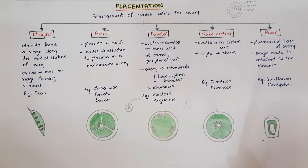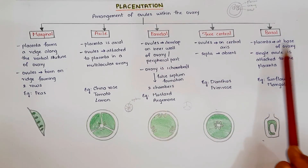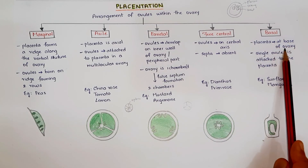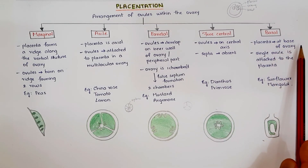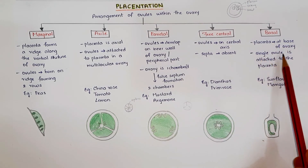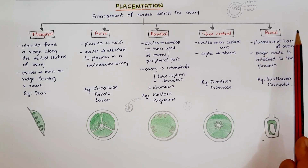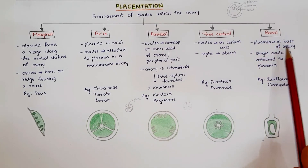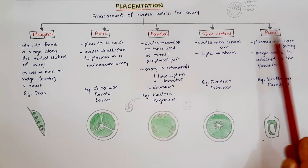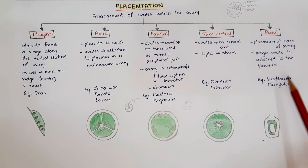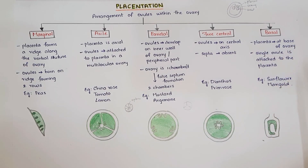Coming to basal placentation: the placenta is present at the base of the ovary, and a single ovule is attached to this placenta. Examples of basal placentation are sunflower and marigold.